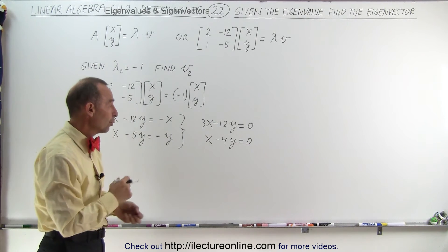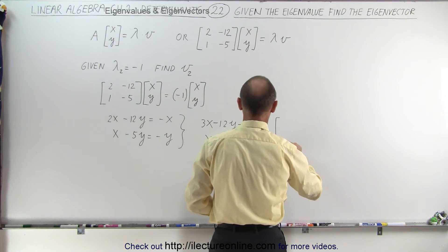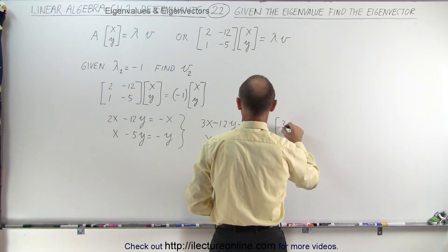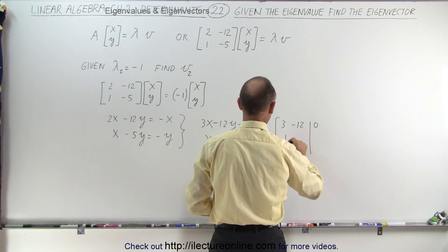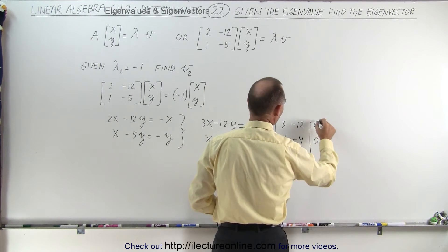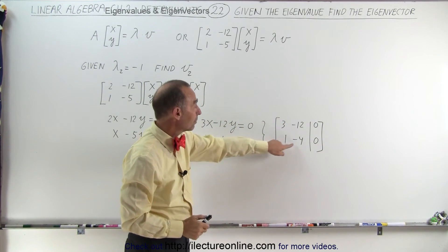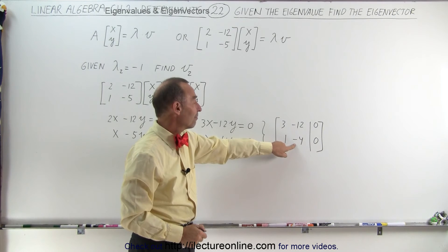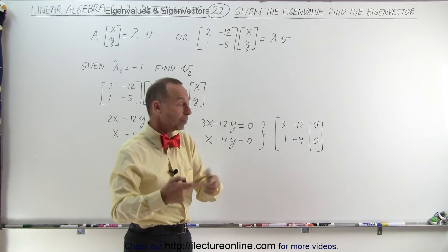We can use the row echelon form methodology. So we're going to write this in an augmented matrix form: 3 minus 12, 0, and 1 minus 4, and 0. And right away we realize that the second row here, 1 minus 4, is a fraction of the first row. If we multiply this by 3, we get that. So there's a duplicate here.